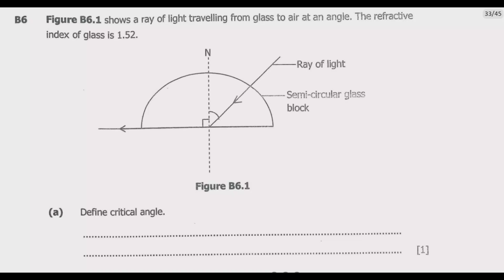Put it differently, the critical angle is an angle of incidence in a denser medium for which the angle of refraction in the less dense medium is 90 degrees.